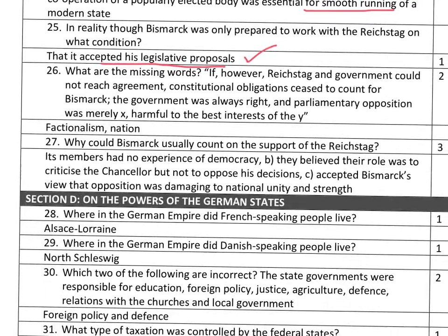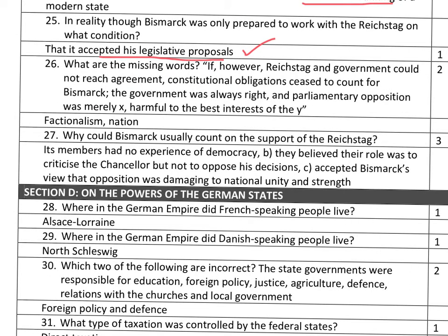Question twenty-six: the first missing word was factionalism, and the second was nation. Question twenty-seven: why could Bismarck usually count on the support of the Reichstag? Up to three points. First, its members had no experience of democracy. Second, they believed their role was to criticise the Chancellor but not to oppose his decisions. Third, they accepted Bismarck's view that opposition was damaging to national unity and strength — a very distinctive feature of the Reichstag in Germany.